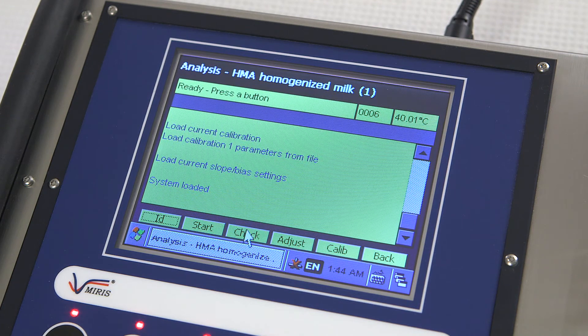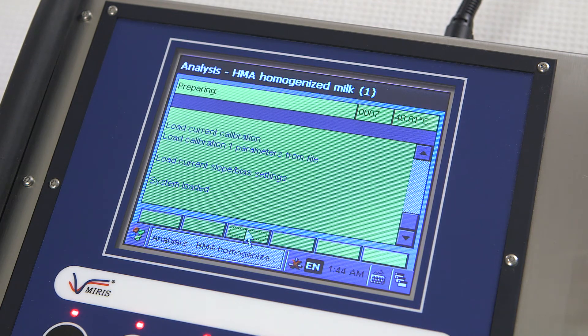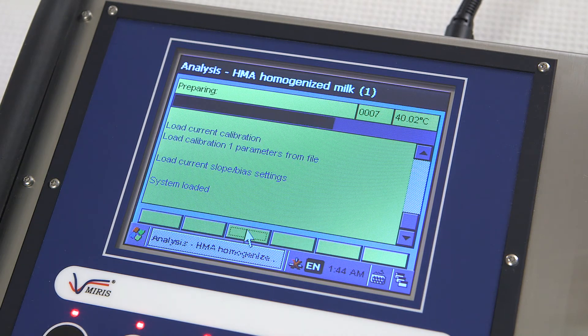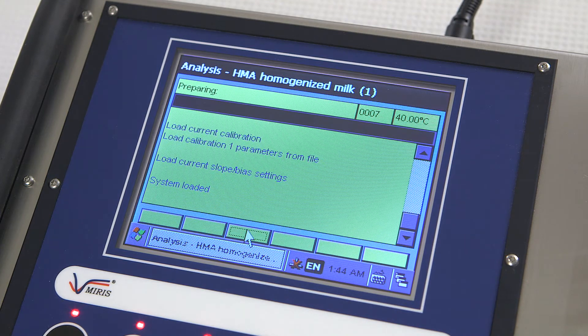Press the check button and wait approximately one minute. When the process is complete, a pass or fail message will appear. If there are any problems with checking the zero setting, then follow the instructions on the screen.